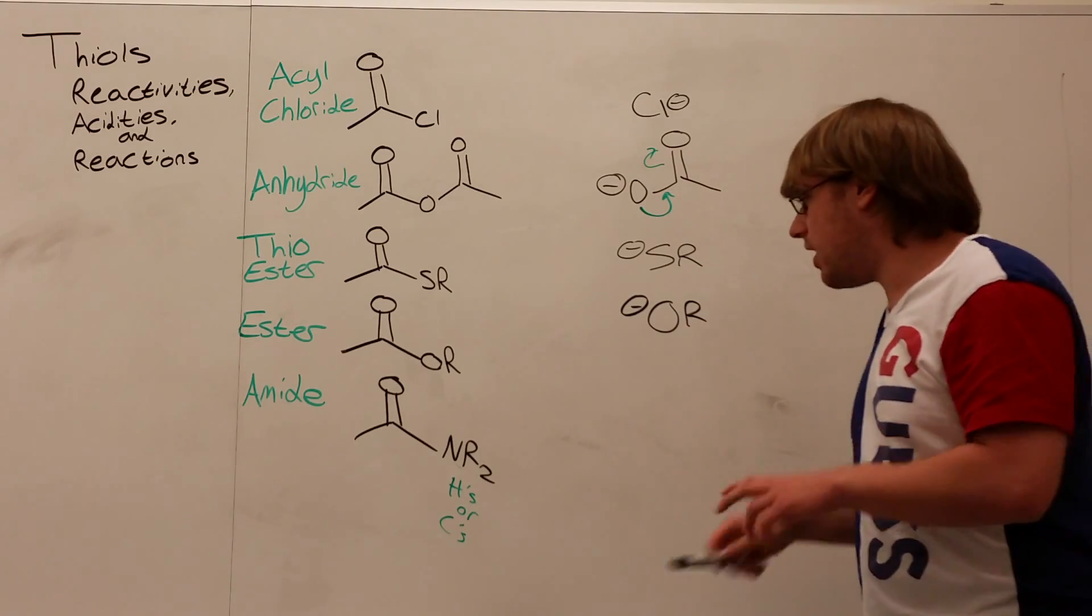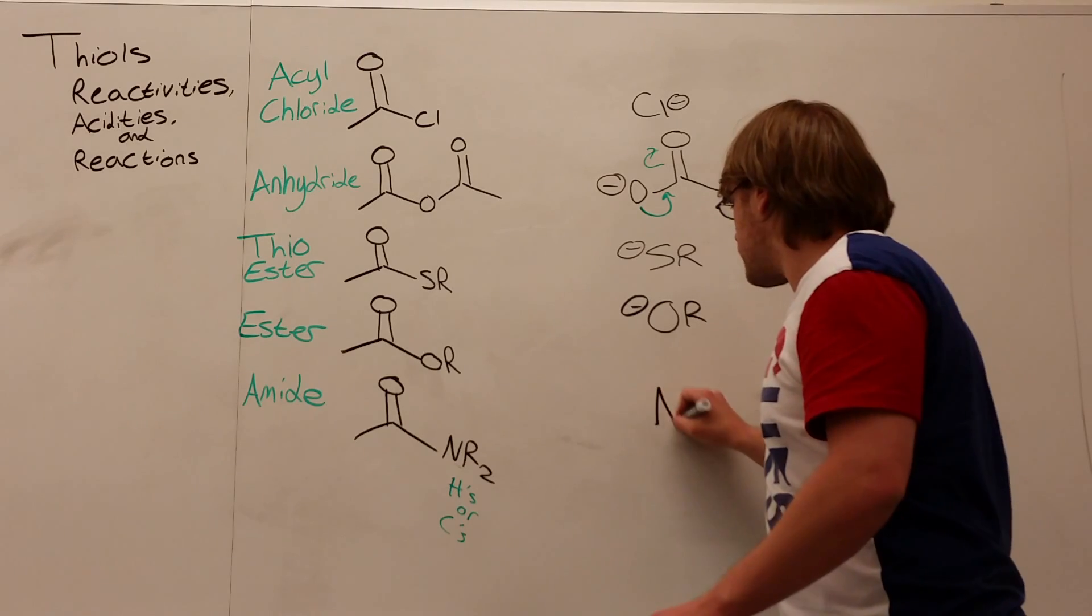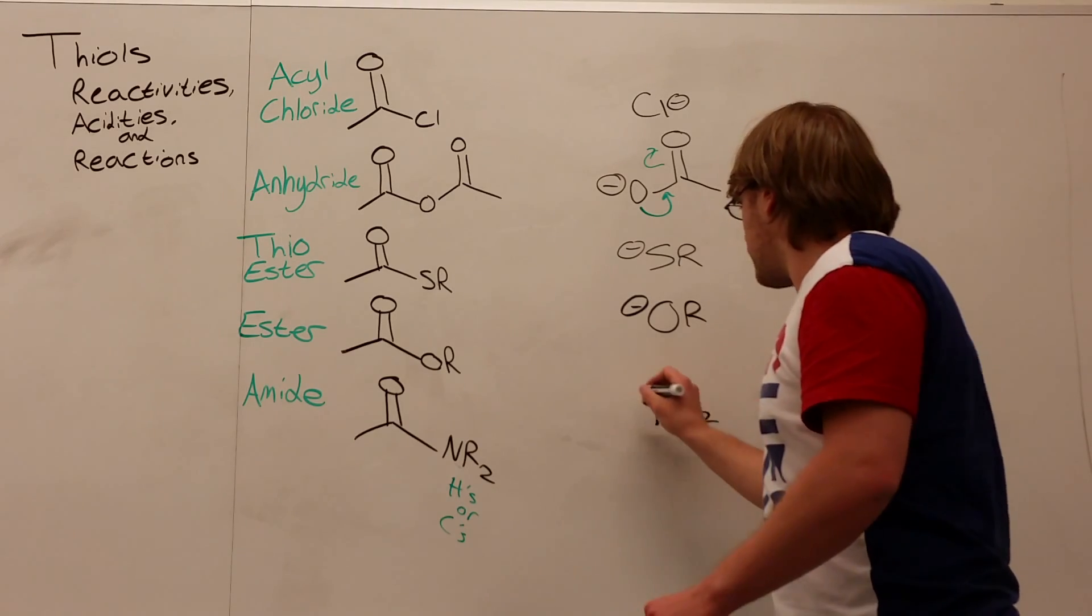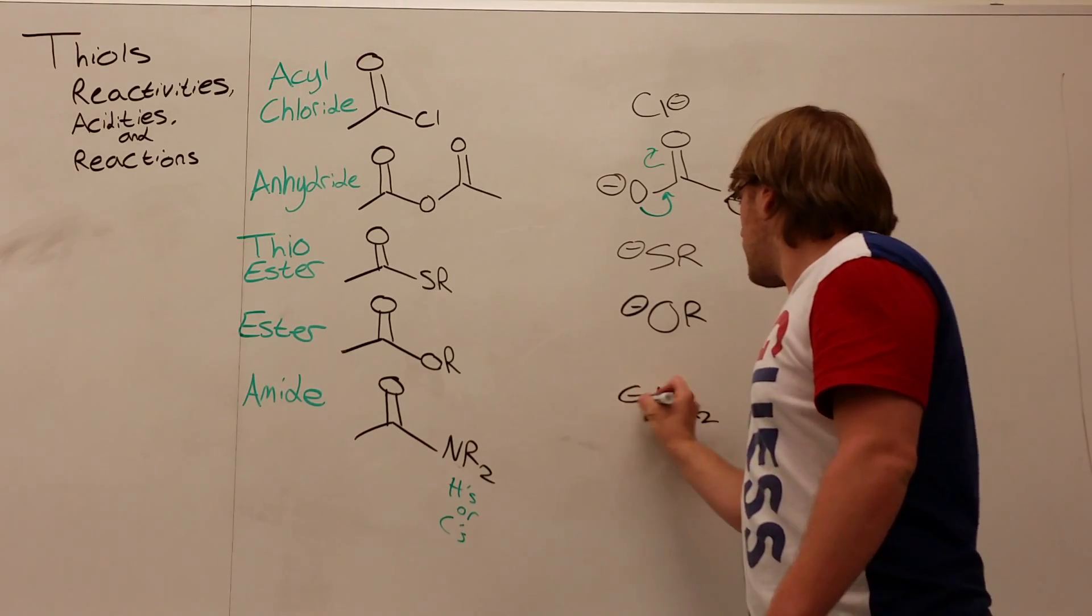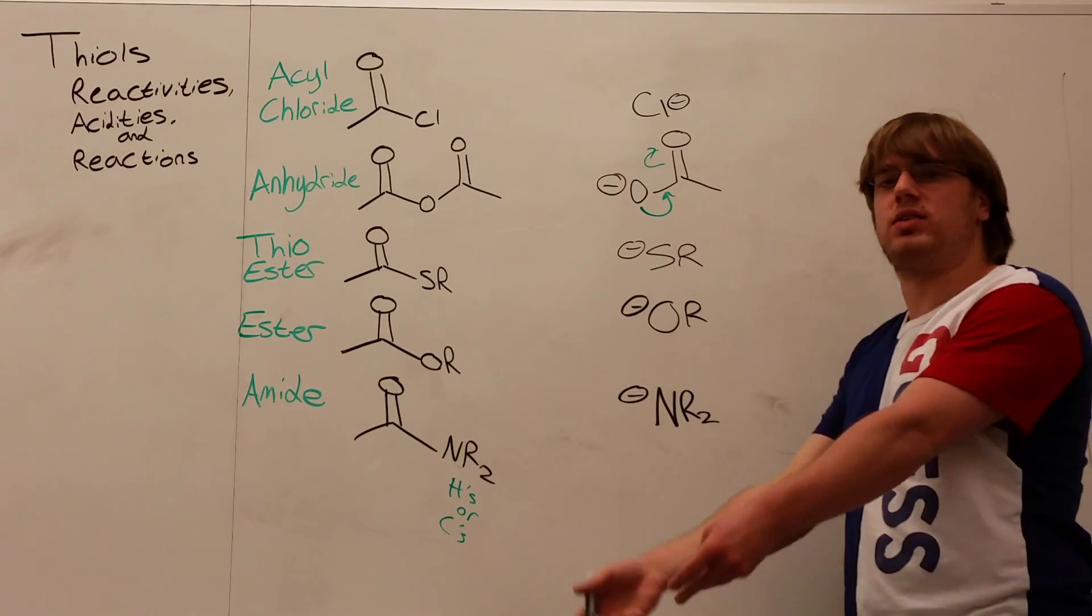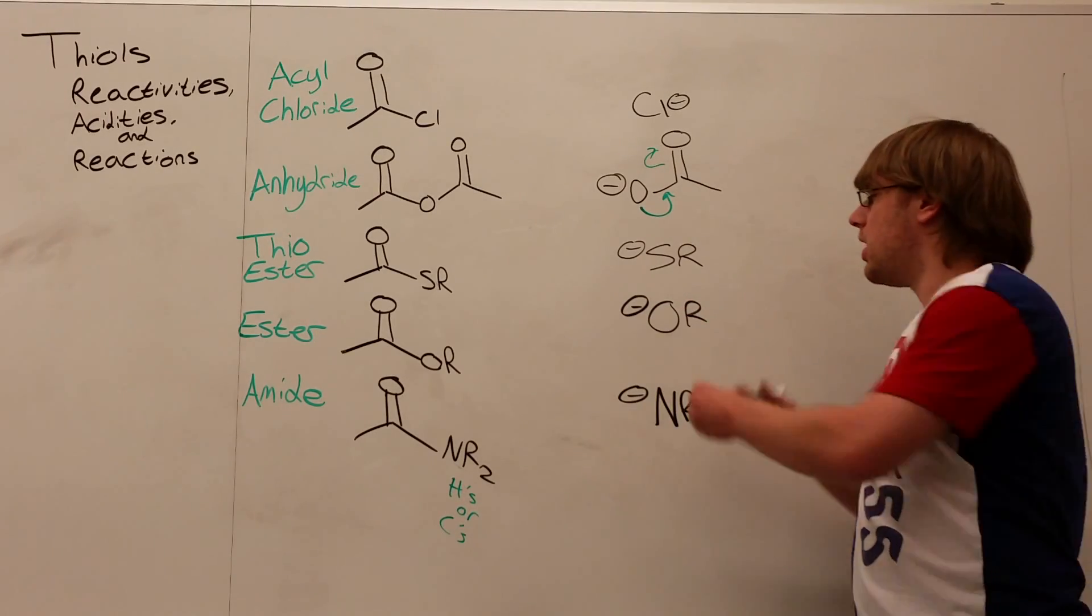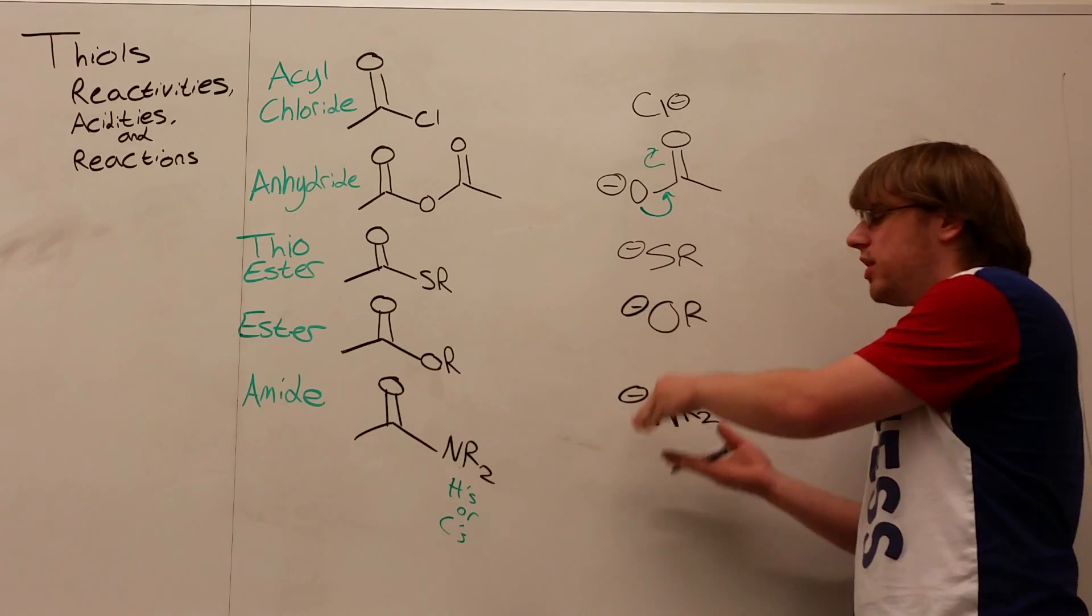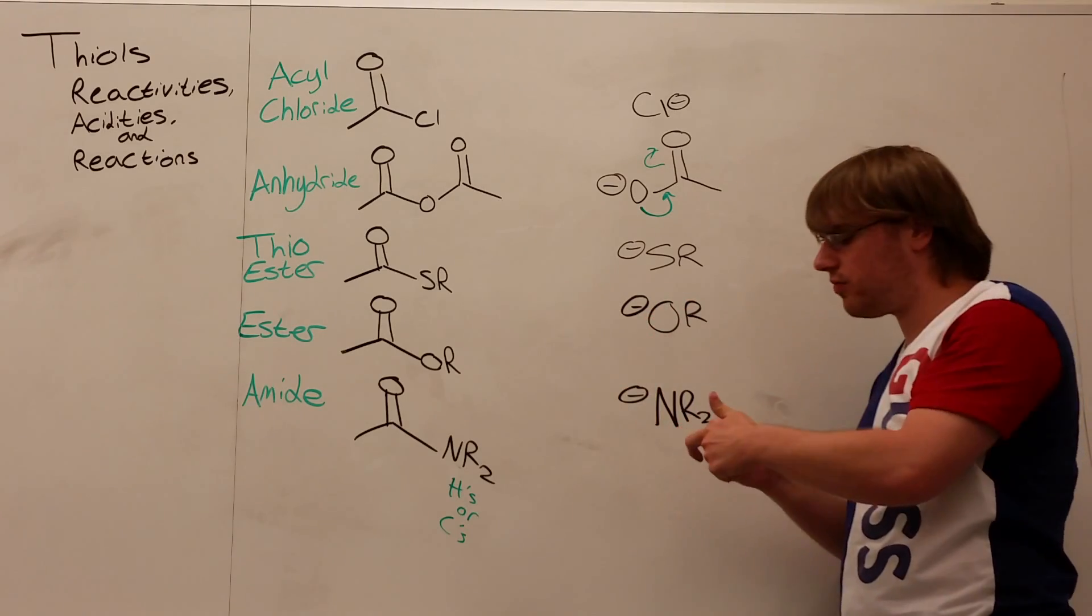And then finally, we have NR2 minus. And if we're comparing things based on electronegativities again, well, oxygen is more electronegative than nitrogen, which means it likes to hold the negative charge better. And so an O minus is much more stable than an N minus who's less electronegative.